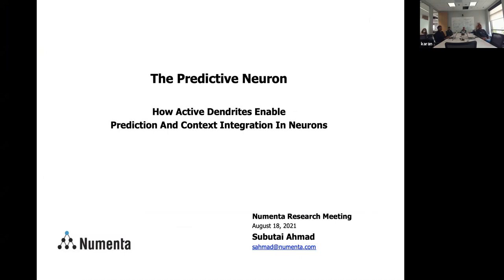I'd like to briefly review the biology behind active dendrites and how we think about and model them, because it forms the basis for a lot of our work beyond sparsity. This is something Ben originally asked about, and there was a lot of discussion on Slack about it, so I thought I'd go through it. I'm not going through our current work in detail — that's for another meeting — but this is the basis for some of it.